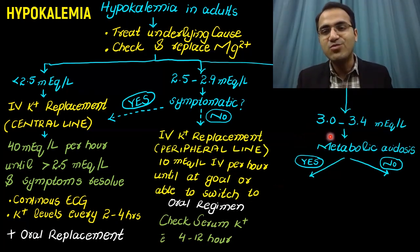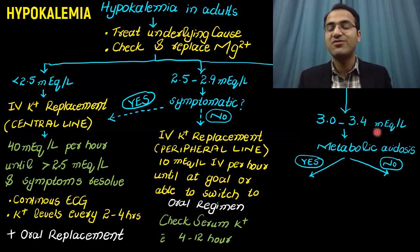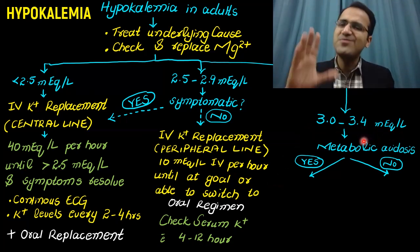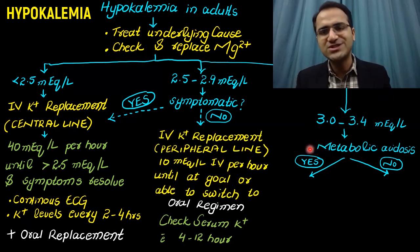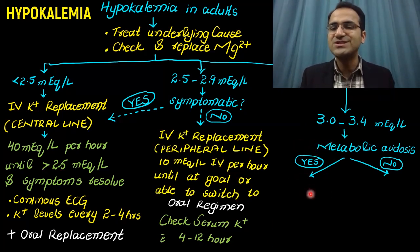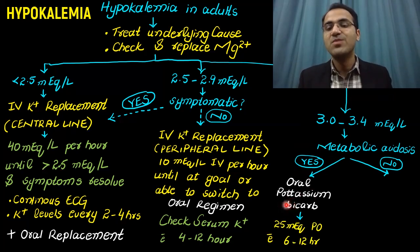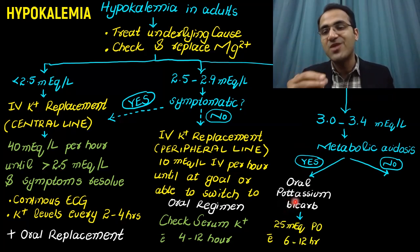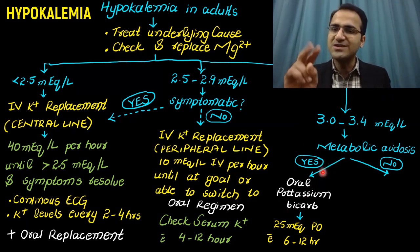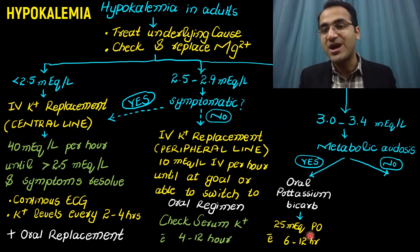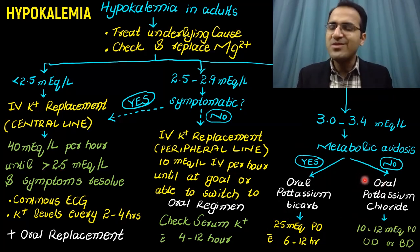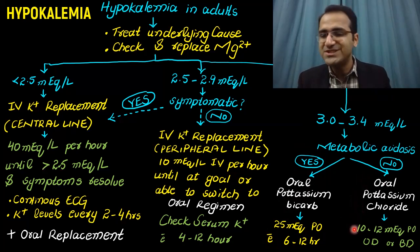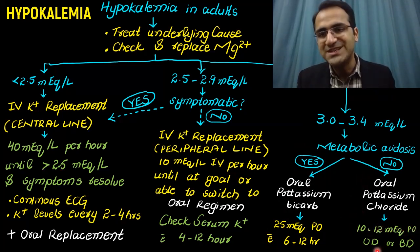In mild hypokalemia with potassium levels from 3 to 3.4 mEq per liter, oral replacement is sufficient. If the patient has metabolic acidosis, give oral potassium bicarbonate 25 mEq every 6 to 12 hours, which corrects both hypokalemia and acidosis simultaneously. If there is no metabolic acidosis, give oral potassium chloride supplements 10 to 20 mEq once or twice daily.